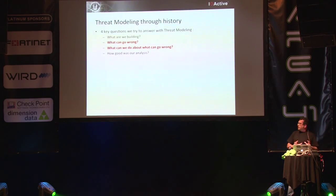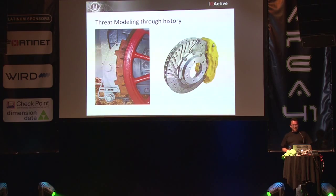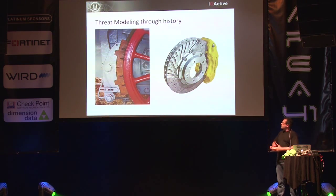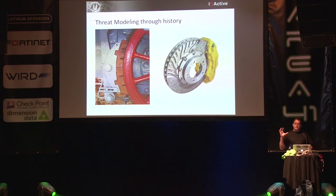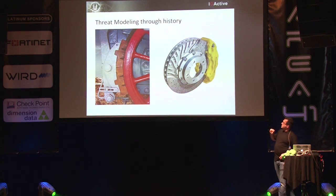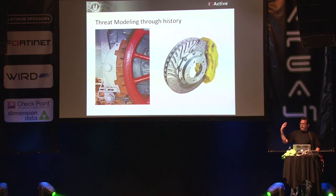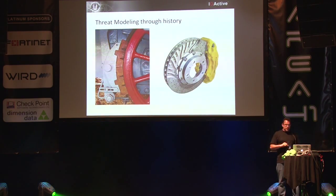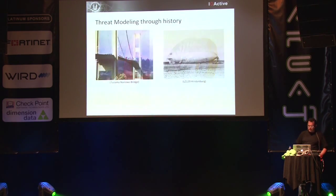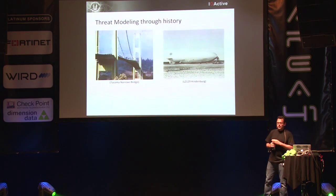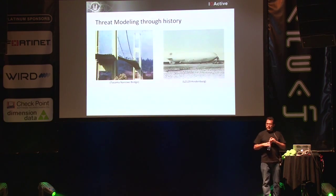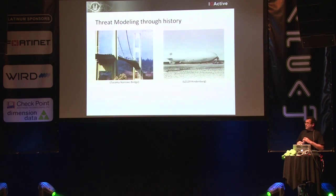If you go back in history and look at physical items: when the first car came out, they needed to make it stop. Brakes are not developed further to make cars stop better — technology is researched to make cars go faster. There are prime examples of threat modeling gone wrong. There's the Tacoma Narrows Bridge — a very nice bridge, the longest in the world at the time, but they didn't account for the wind. It started to vibrate and after five minutes, it just collapsed.